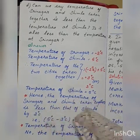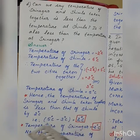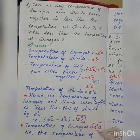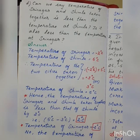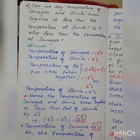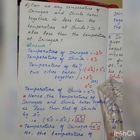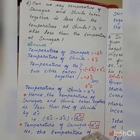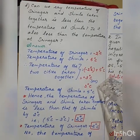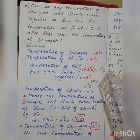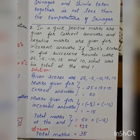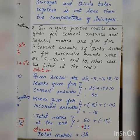Hence the temperature of Srinagar and Shimla taken together is less than that of Shimla — by how many degrees difference? Shimla is 5 degree and our answer is 3 degree, so the difference is 2 degrees. For the second question: is it also less than the temperature of Srinagar? The temperature of Srinagar is minus 2 degree Celsius, but the temperature of 2 cities taken together is 3 degree Celsius — so it is greater, not less. The answer is no: the temperature of Srinagar and Shimla taken together is not less than the temperature of Srinagar.